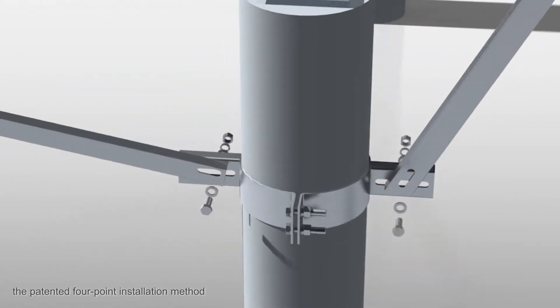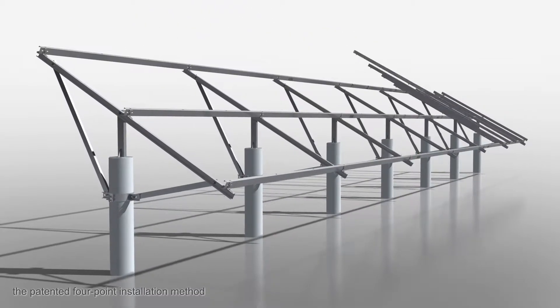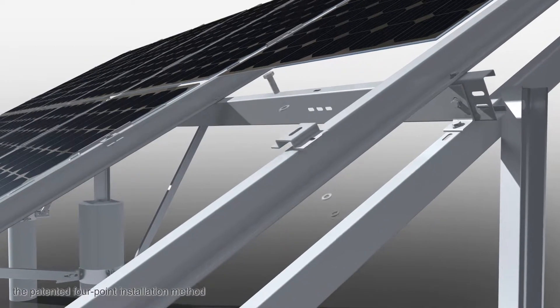As for the patented 4-point installation method, the structure supports are connected with the fixed base bolts of modules by hoops. In this way, the modules are fixed beyond the purlin width and above the purlin height.